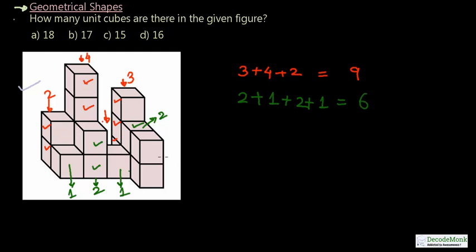Now coming to the front end, we have got only one column consisting of two cubes. Here are those two cubes, one and two. So this has got two cubes. There are no other cubes in the front row. I don't think there is any other cube other than what we have counted. Let us add: nine plus six, fifteen, plus two, seventeen.